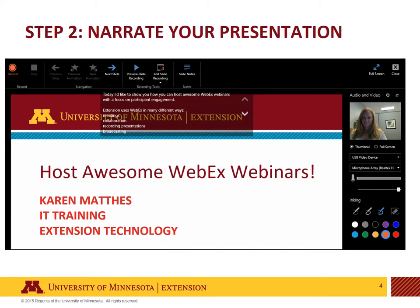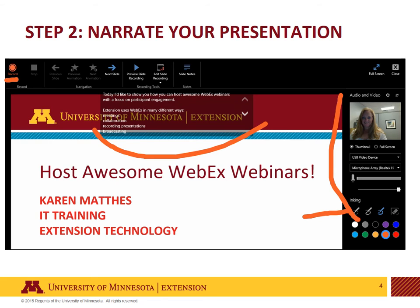In record mode you'll see your slide presentation in the main body of the screen. And to the right you'll see the audio and video panel where you can select audio and video inputs and check your volume. You can choose a pen size and ink color if you want to write on your slides. In the top center you'll see your slide notes. And when you're ready to record just click the record button.